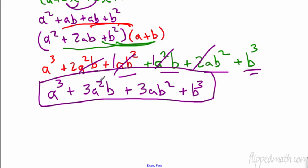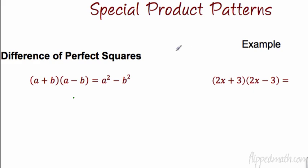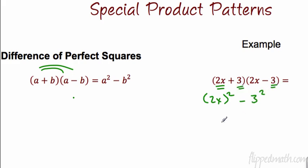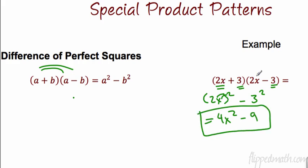Why do we go through this whole process? Because we like to find patterns — patterns will help us simplify our work more quickly. Here's something we already know: the difference of perfect squares. When we have a plus b times a minus b, it's just the difference of two squares. So if I'm looking at 2x plus 3 and 2x minus 3, I know immediately it equals a squared minus b squared. Don't forget when you have a coefficient in front, that exponent goes to that coefficient too — so it's 4x squared minus 9. Because I know that rule, I don't have to do double distribute.